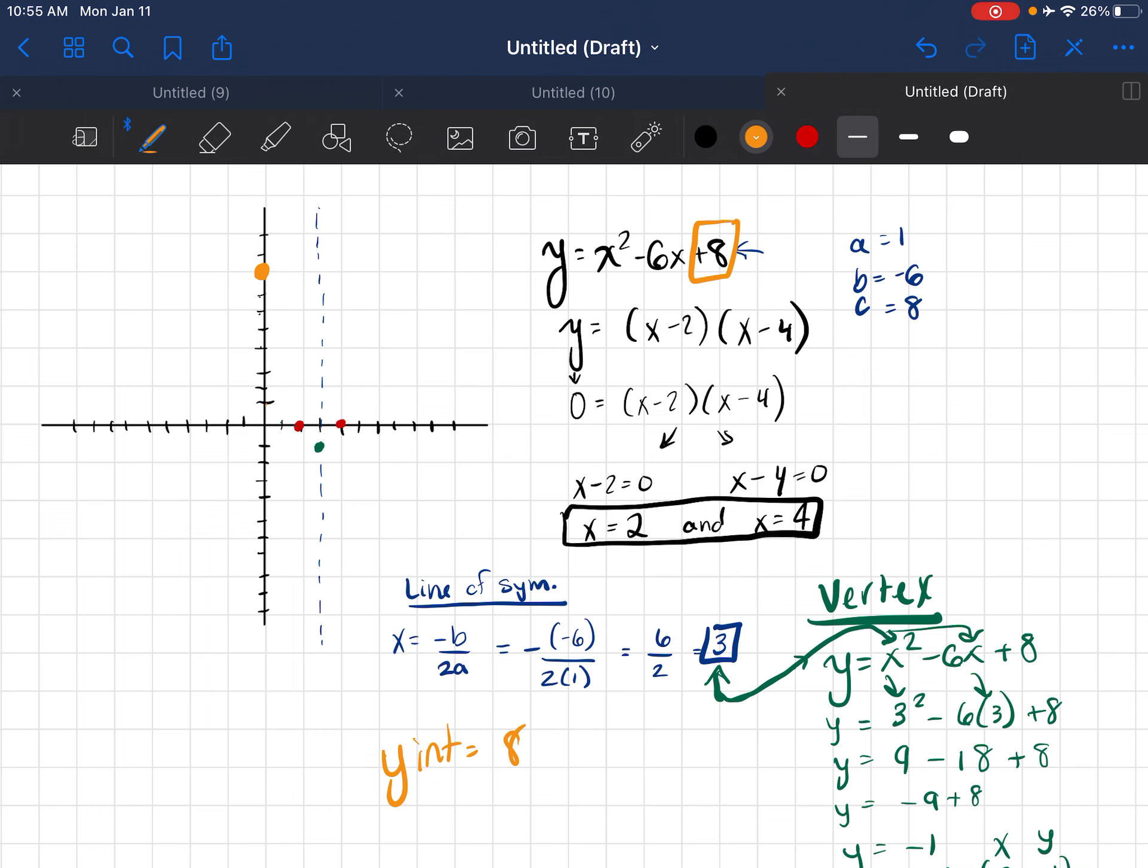Now I can plot another point. I know that the line of symmetry is a reflection line. So I have 1 and a half spaces on one side. So if I reflect it, I have 1 and a half, and that's going to be a point there, because they're equal distance from the line of symmetry.